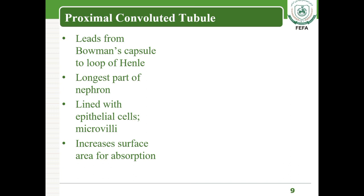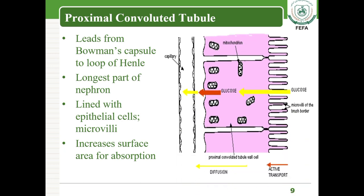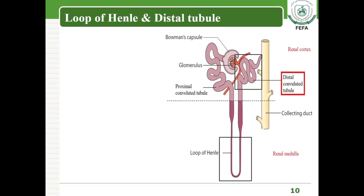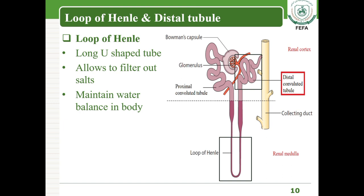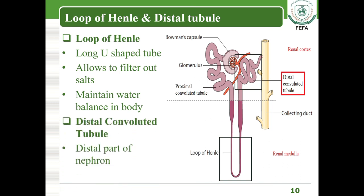The proximal convoluted tubule is the longest part of the nephron, lined with epithelial cells that have microvilli to increase the surface area for reabsorption. Necessary materials that entered the Bowman's capsule are reabsorbed back into the blood capillaries through the renal tubules. The loop of Henle is a long U-shaped tube that filters out salts and maintains the concentration of water within the body.